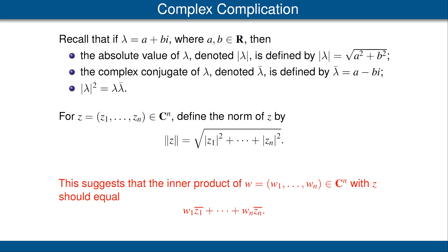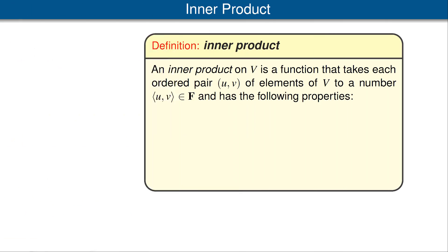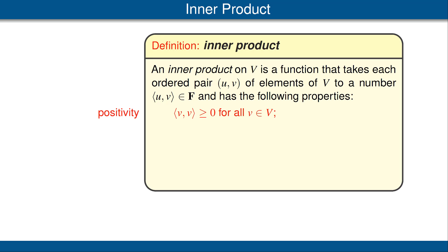We are now ready to give our definition of inner product. We will give a definition that works simultaneously regardless of whether the scalar field F equals the real numbers or the complex numbers. An inner product on our vector space V is a function that takes each ordered pair of elements u, v in V to a number, denoted by ⟨u, v⟩, that has the following properties. The first property is that the inner product of a vector with itself should be a non-negative number. The second property is that the inner product of a vector with itself is equal to zero if and only if the vector is zero.